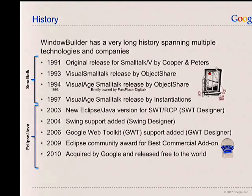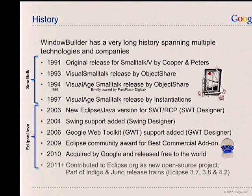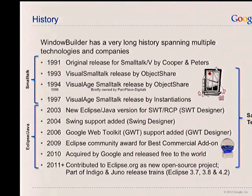In 2009, Window Builder was the Eclipse Community Award winner for Best Commercial Add-On. In 2010, it was acquired by Google and very quickly released free and then turned over to the Eclipse Foundation as open source. It has been part of the last two release trains, Indigo and Juno — Eclipse 3.7 and 4.2. And the interesting thing is it's been the same team of people, myself included, who've been working on it for nearly 20 years across all these different technologies.